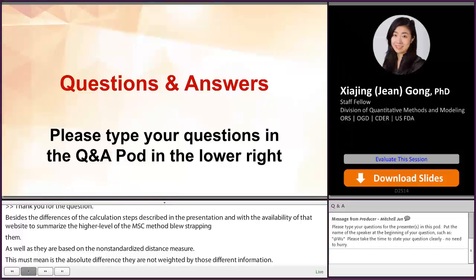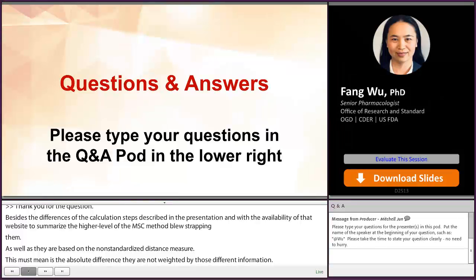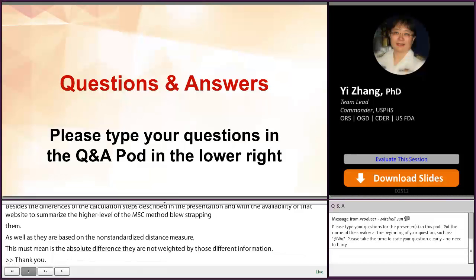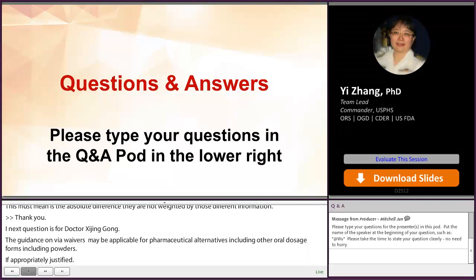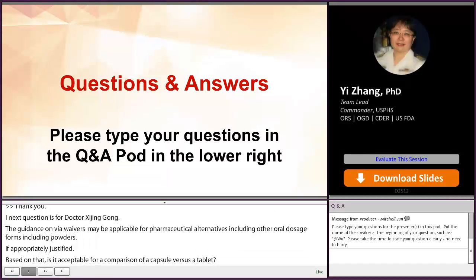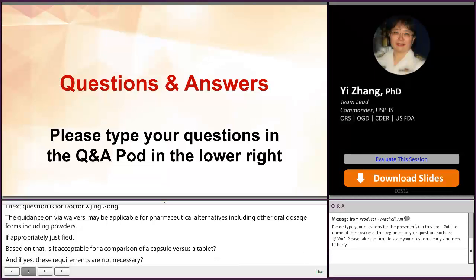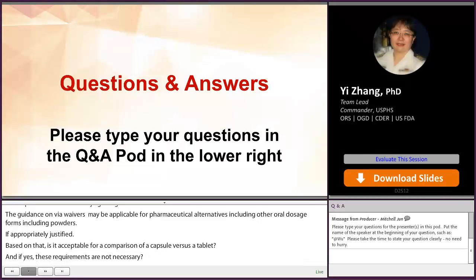Our next question will be for Dr. Zhang. The FDA guidance for biowaivers based on BCS states, BCS-based biowaivers may be applicable for pharmaceutical alternatives, including other oral dosage forms, for example, powders, if appropriately justified. Based on that, is it acceptable for a comparison of a capsule versus a tablet? And if yes, so Q1 and Q2 requirements are not necessary. So quick answer to this question is no, because tablets and capsules, they are not considered to be the same dosage form.